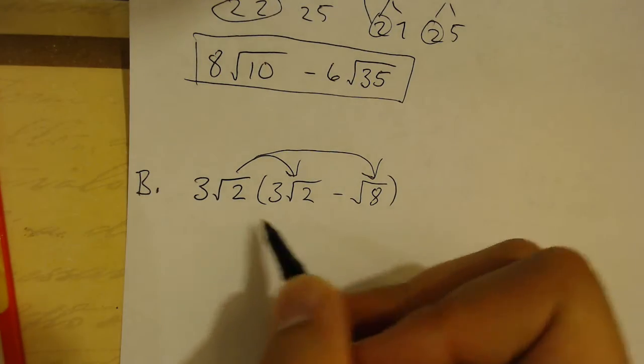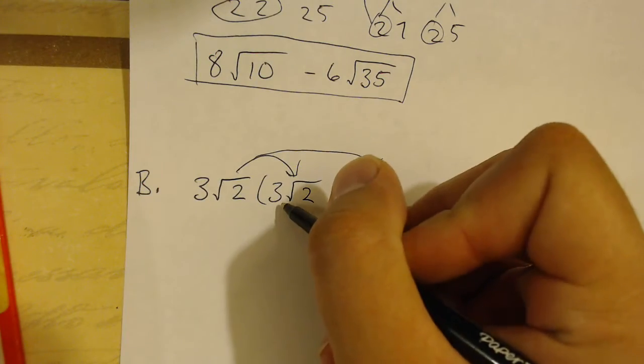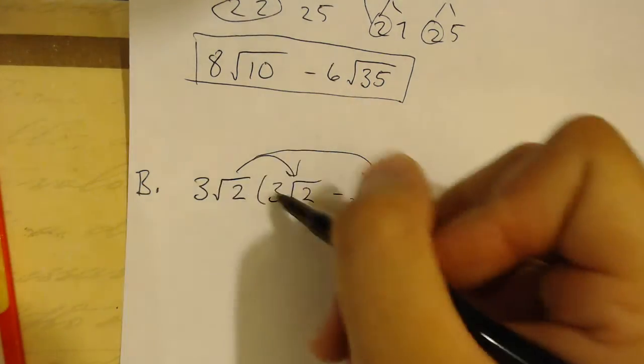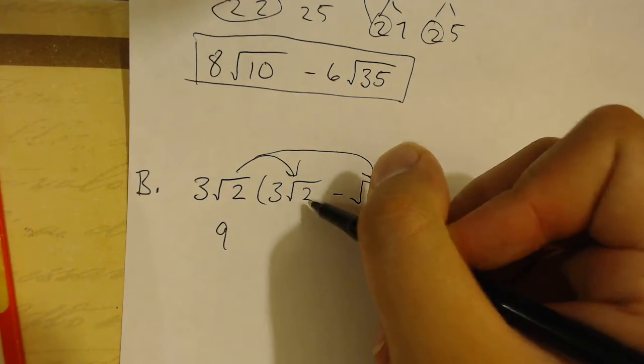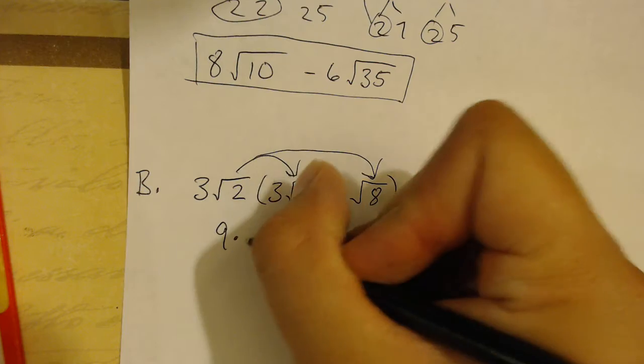When it comes to multiplying these, the whole numbers get multiplied by the whole numbers, the radicals get multiplied by the radicals. So, 3 times 3 gives me 9. Square root of 2 times square root of 2 is just 2. So, I get 9 times 2.